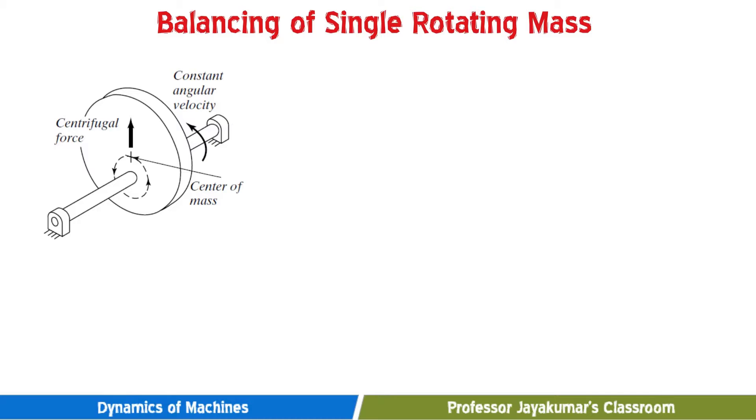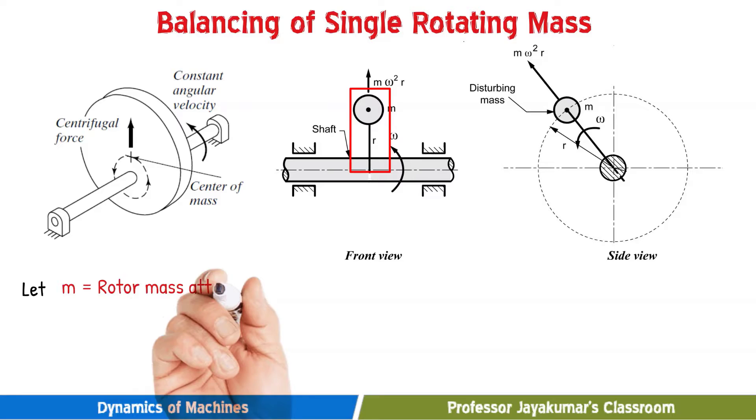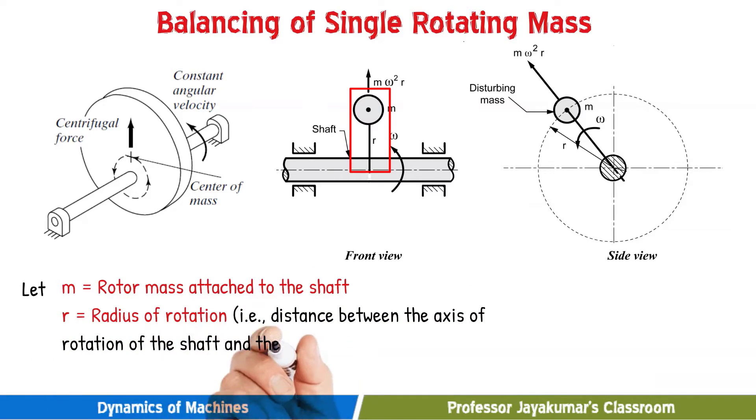This is the actual balancing problem. In order to understand the actual problem we need to draw front view as well as side view of the diagram. As you could see from the front view the unbalanced mass is shown by a circle dot and the distance between the axis of rotation and the center of the unbalanced mass is represented by r. In practice we will not be having like there is a rod at the end of the rod there is a mass. No, that is a schematic representation for solving our problem. Hope that's clear for you.